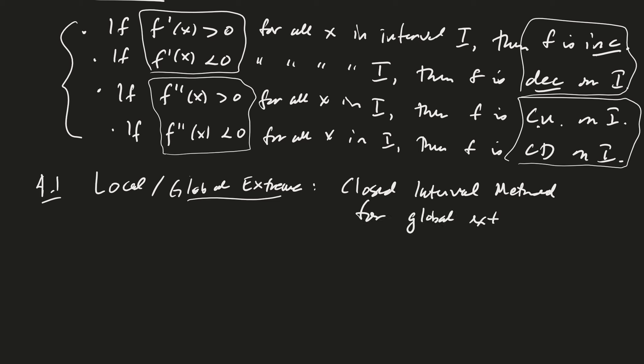In the closed interval method for global extrema, we found the critical points of a function — where the derivative is zero or not defined — then built a table of values with the critical points and the endpoints. You plug all those points into your function and look to see which is biggest and smallest. Now we'll discuss local extrema using first and second derivatives.